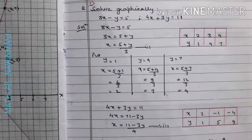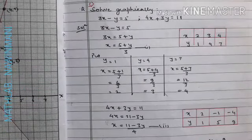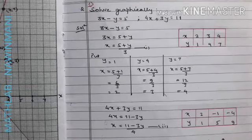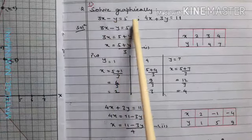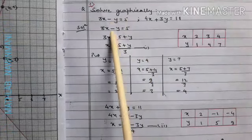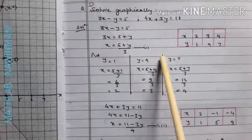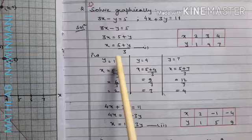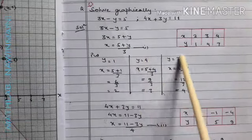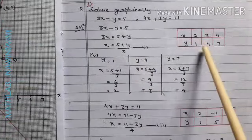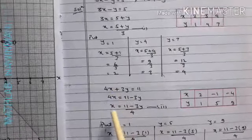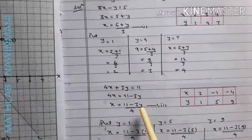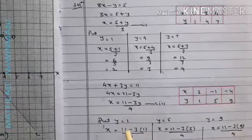Okay children, let me just show two more examples for plotting graphs of simultaneous linear equations. How to do this? By putting these values, you have to add this here, and you get the table. Similarly, this equation - how to solve? Make x the subject, then start putting the value of y.